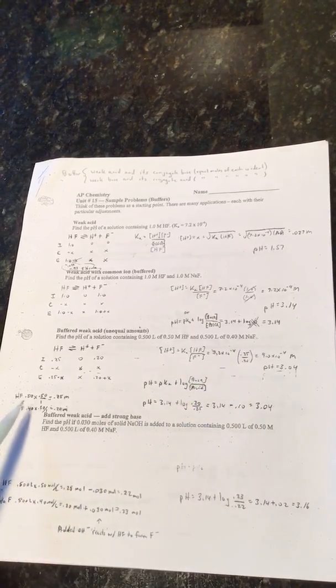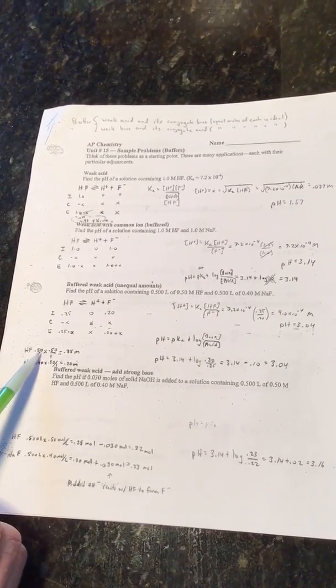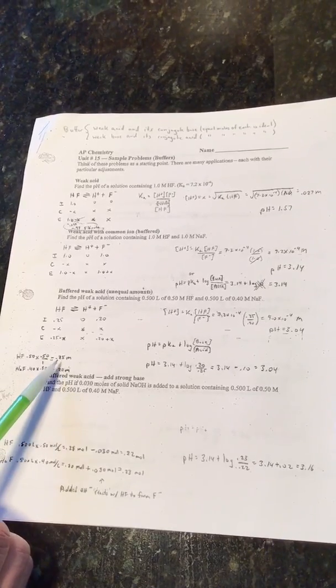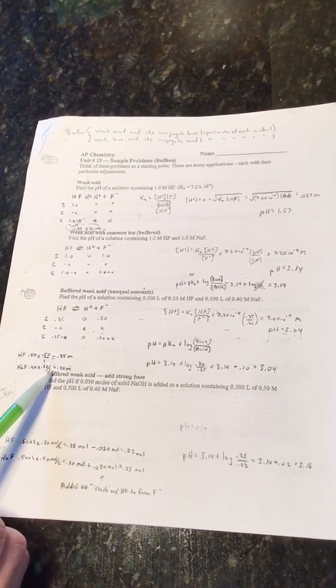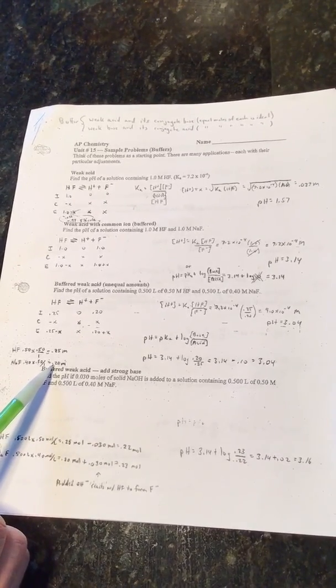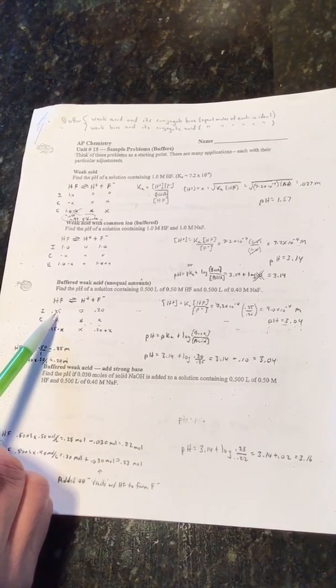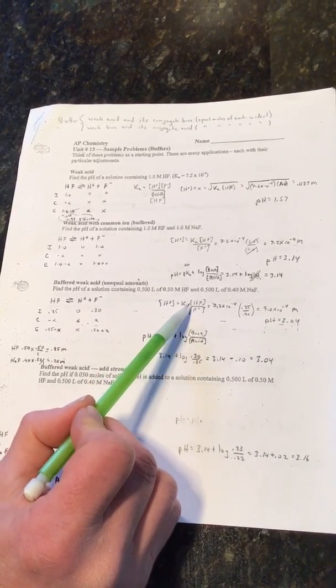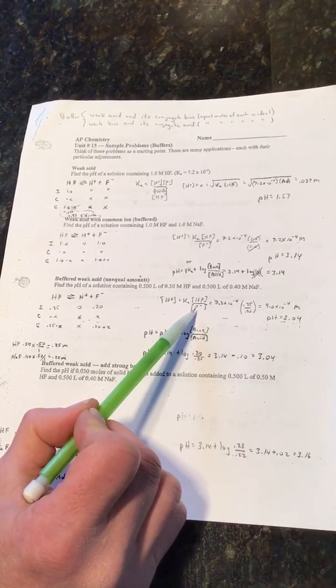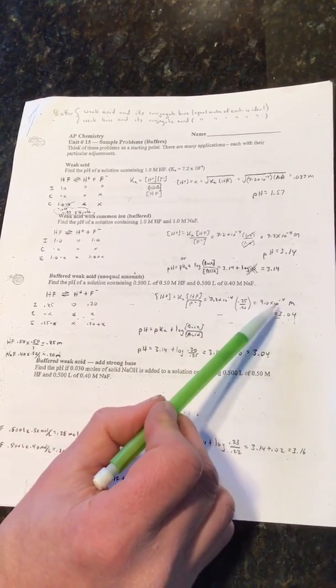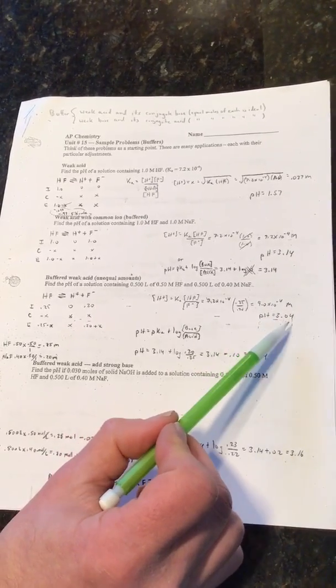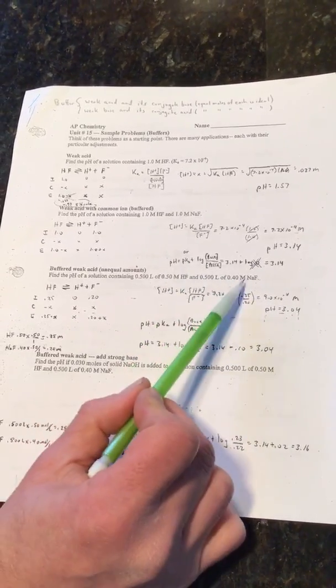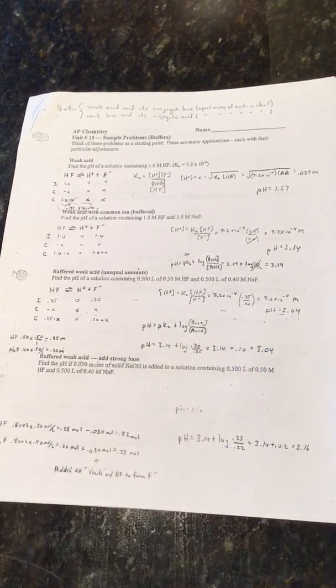Find the pH of a solution containing 0.500 liters of 0.50 molar HF and 0.500 liters of 0.40 molar NaF. I'm going to do dilution formula with the molarities. Because it's 0.5 liters of each thing, it cuts the concentration in half. So I end up with 0.25 molar of HF and 0.20 molar of NaF. We're concerned about the F-. So now my numbers are 0.25 and 0.20. I can put this in the H+ equals Ka times HF over F- equation, and I get 9.0 times 10 to the negative fourth molar and a pH of 3.04. Notice I had a little bit more of the HF than the NaF, a little bit more acid than base, so the pH was a little bit lower in this case.